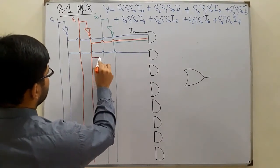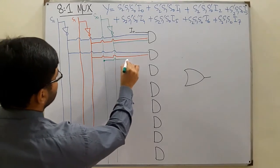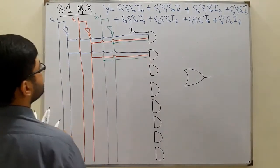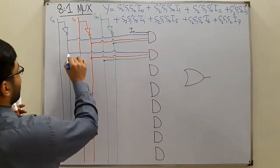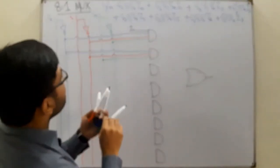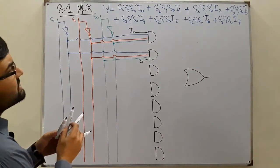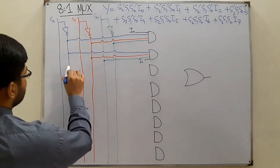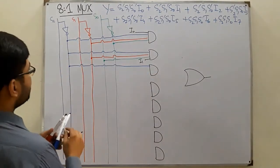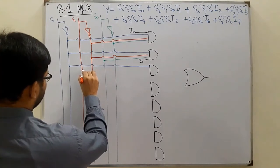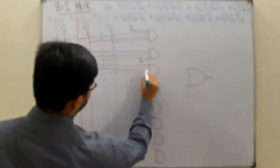Completing the second gate connection — S2's complement, S1's complement, and S0 directly — and then I1 is connected to this gate. For the third gate you have S2's complement, then S1 directly, and S0's complement, and then I2 is connected.